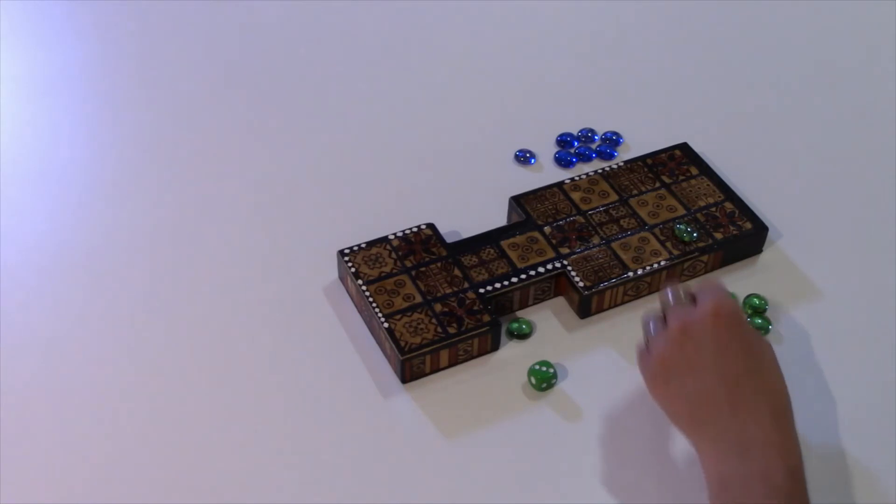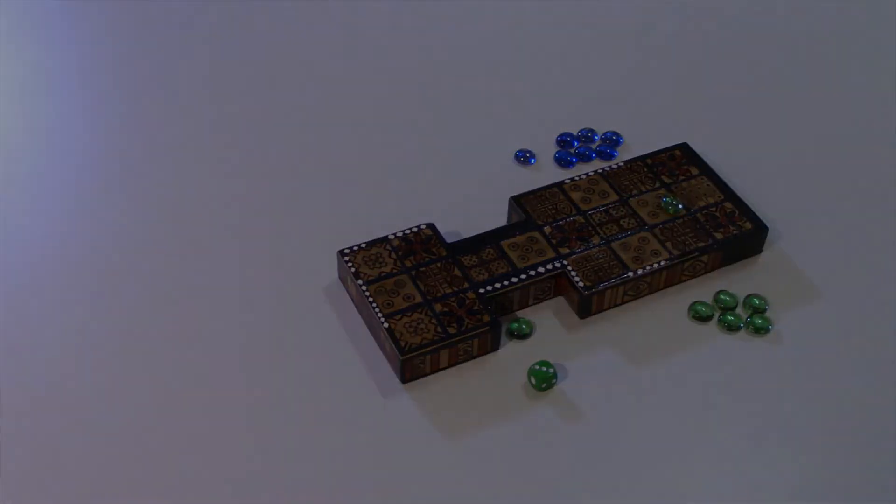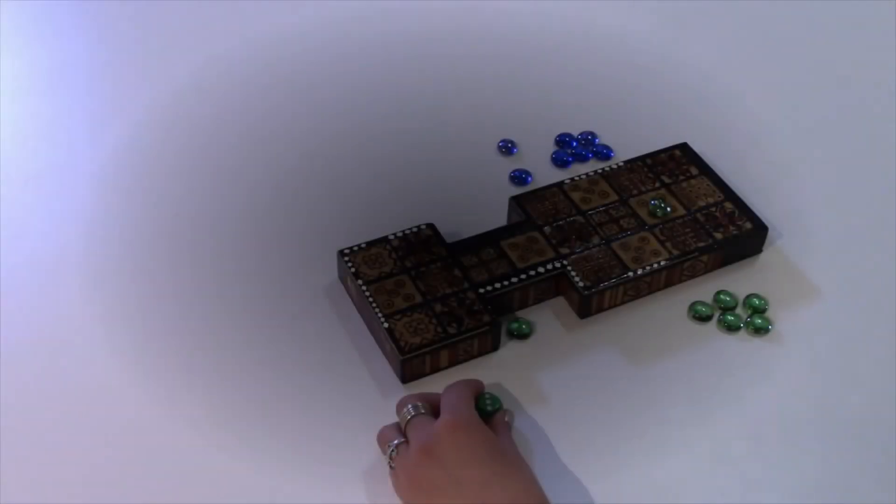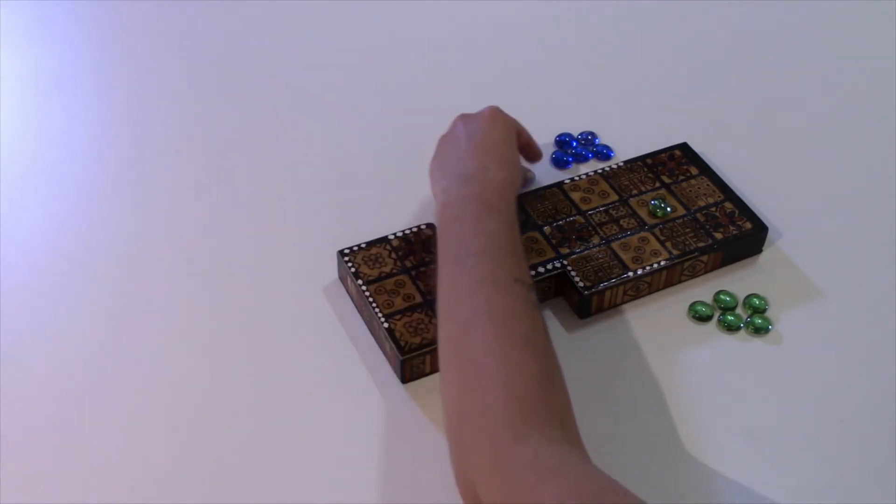Once that first player has rolled their dice and moved their spaces, it's player 2's turn. Player 2 rolls the dice and if they land on a 1, 2, 3, or 4, they move their game piece that number of tiles.